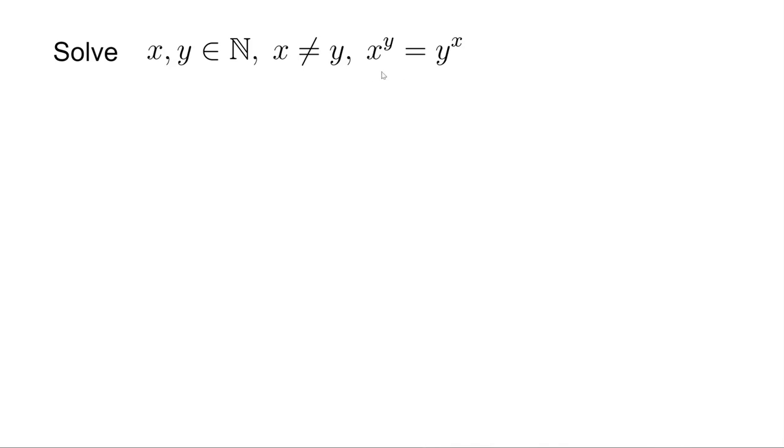Because prime numbers cannot be written as a product of any other prime numbers. So if there's a unique prime factor in x that y doesn't have, then this prime factor also exists in x to the degree of y, and it cannot be constructed by y to the degree of x. Vice versa.